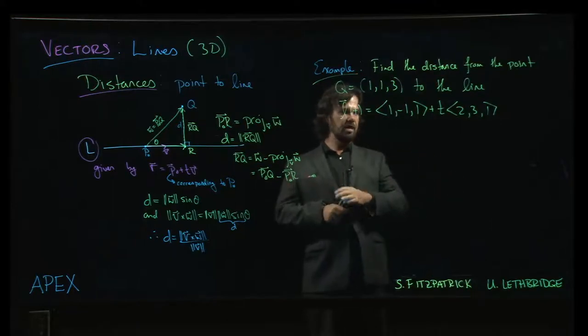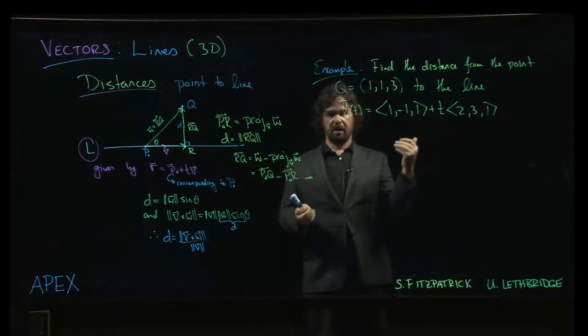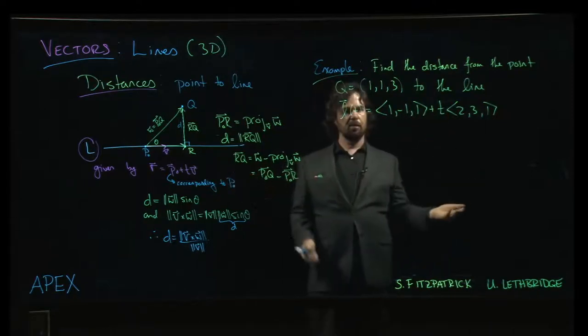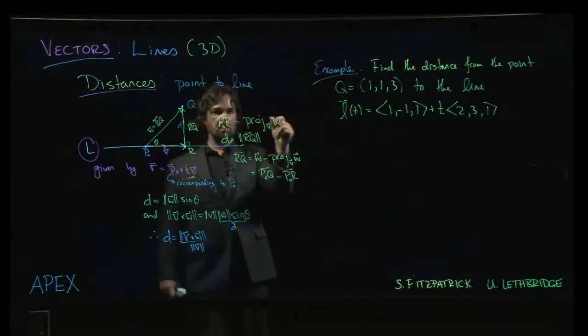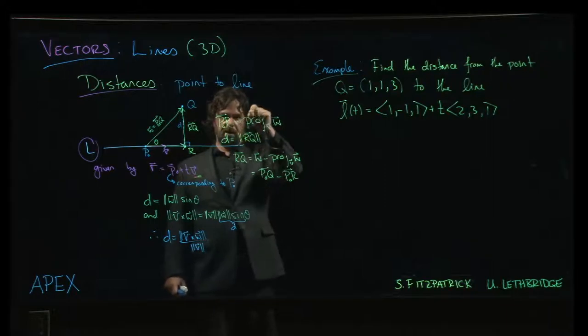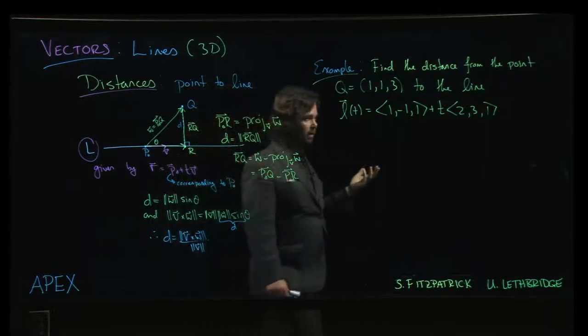It's a function of t. For each value of t that you plug in, you get a vector. In the collection of all output values for those vectors, they describe the line. You sort of think about following the tip of the vector as it traces along the line.